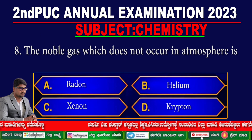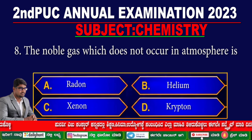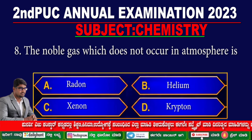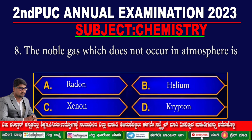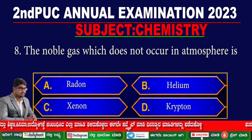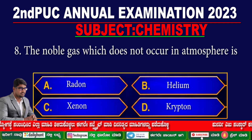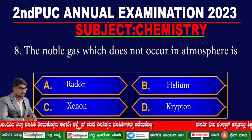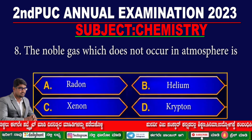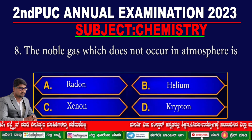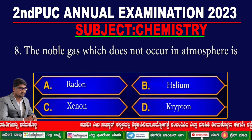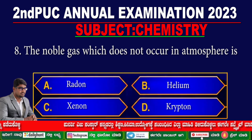Question 8. The noble gas which does not occur in the atmosphere is — [options presented].